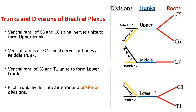Each of these trunks divides into an anterior division and a posterior division. So there are 3 trunks — upper, middle, and lower — and each has 2 divisions: anterior and posterior, giving 6 divisions in total.